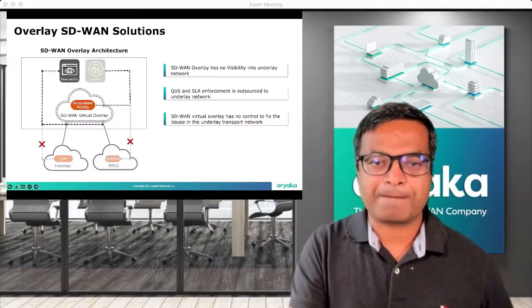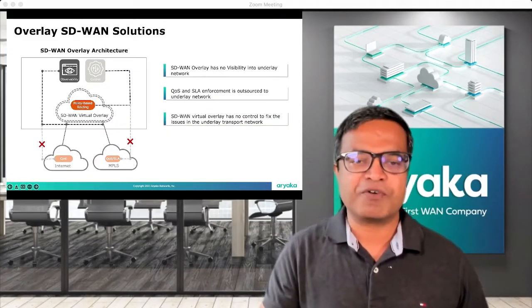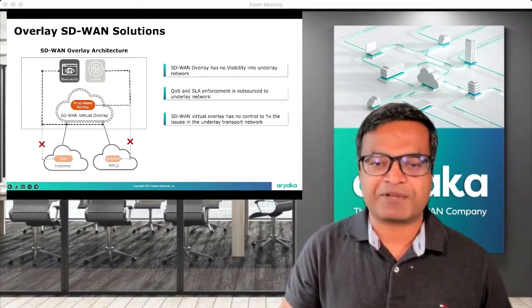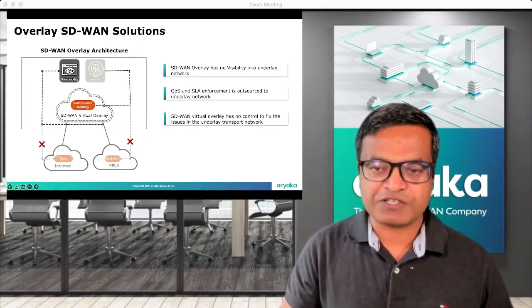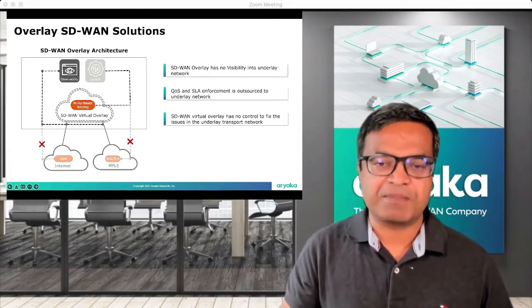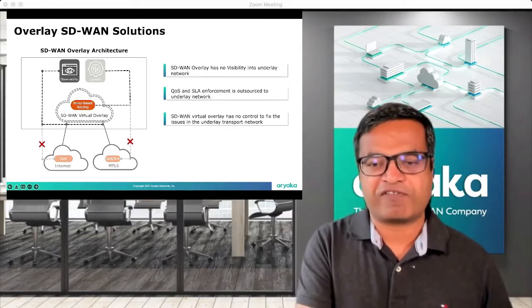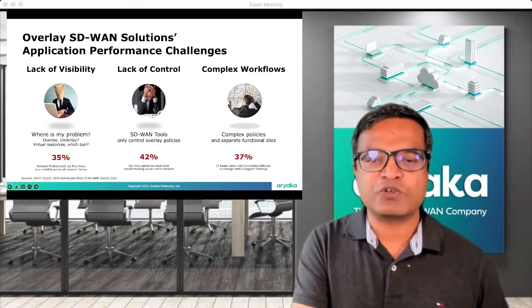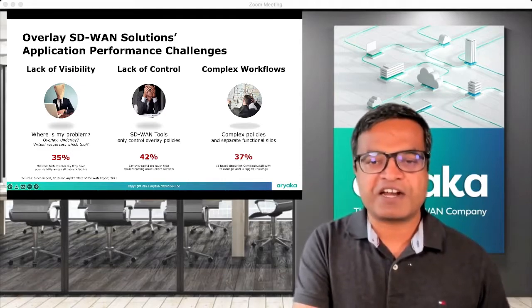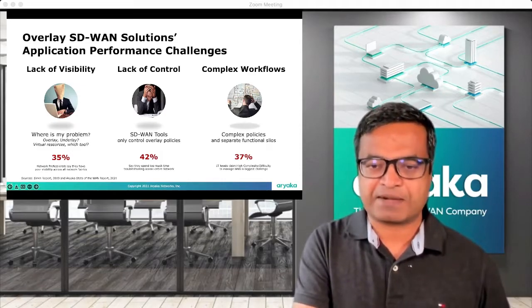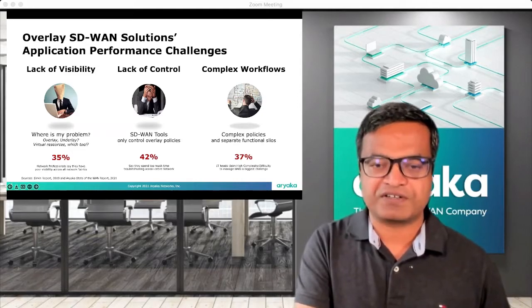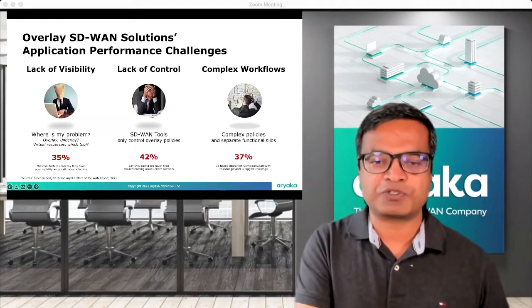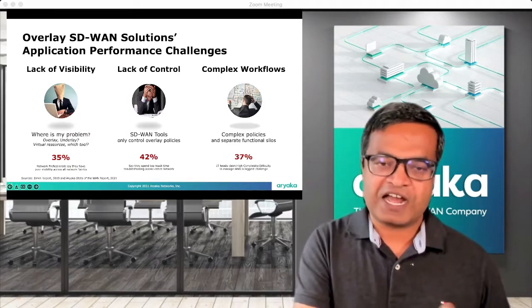Observability. The first step towards ensuring application performance is to be able to monitor performance and identify potential issues before they impact application experience. Many SD-WAN overlay solution providers claim full visibility, but without access to the underlay transport network, their claims fall flat. Due to opaque visibility into the underlay network, overlay SD-WAN solution providers can only redirect toward the problem in the underlay transport network rather than pinpoint the exact problem, let alone being able to resolve it. Frustration with overlay SD-WAN solutions — their visibility, control, and complex siloed approach — is voiced in multiple research reports as shown in the slide here.